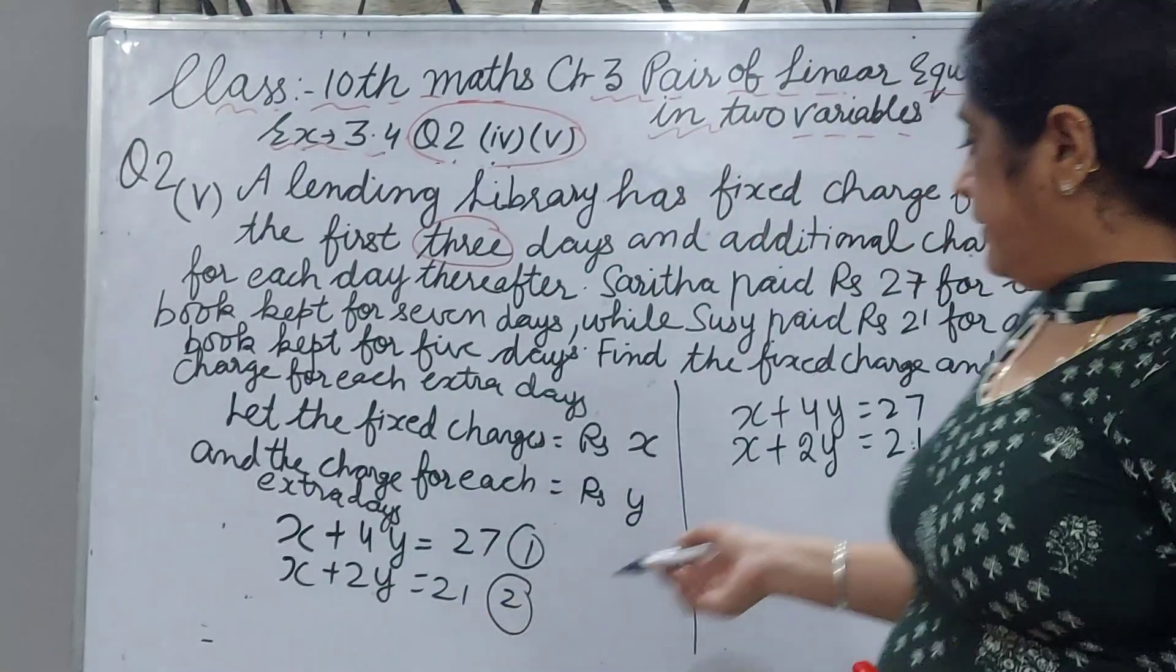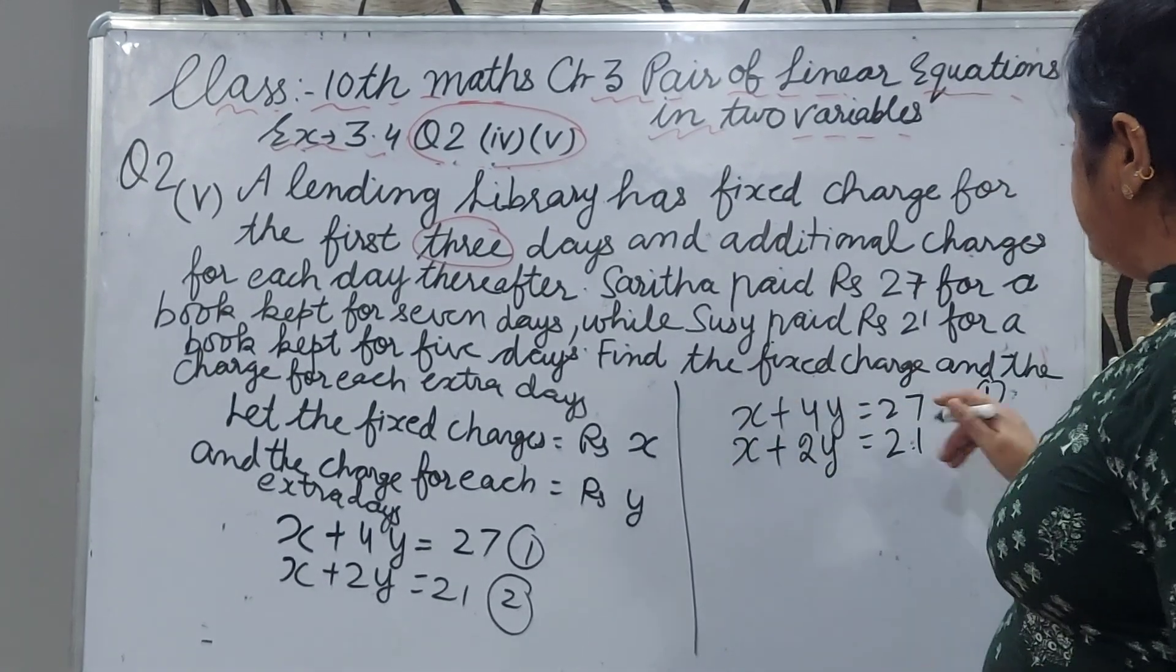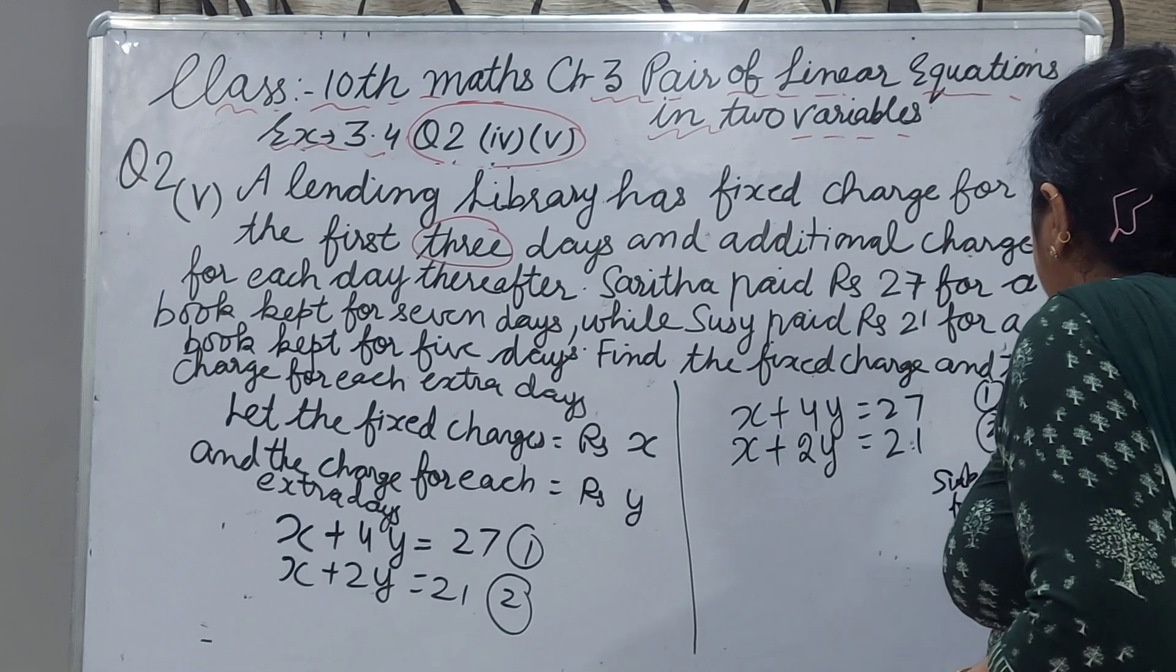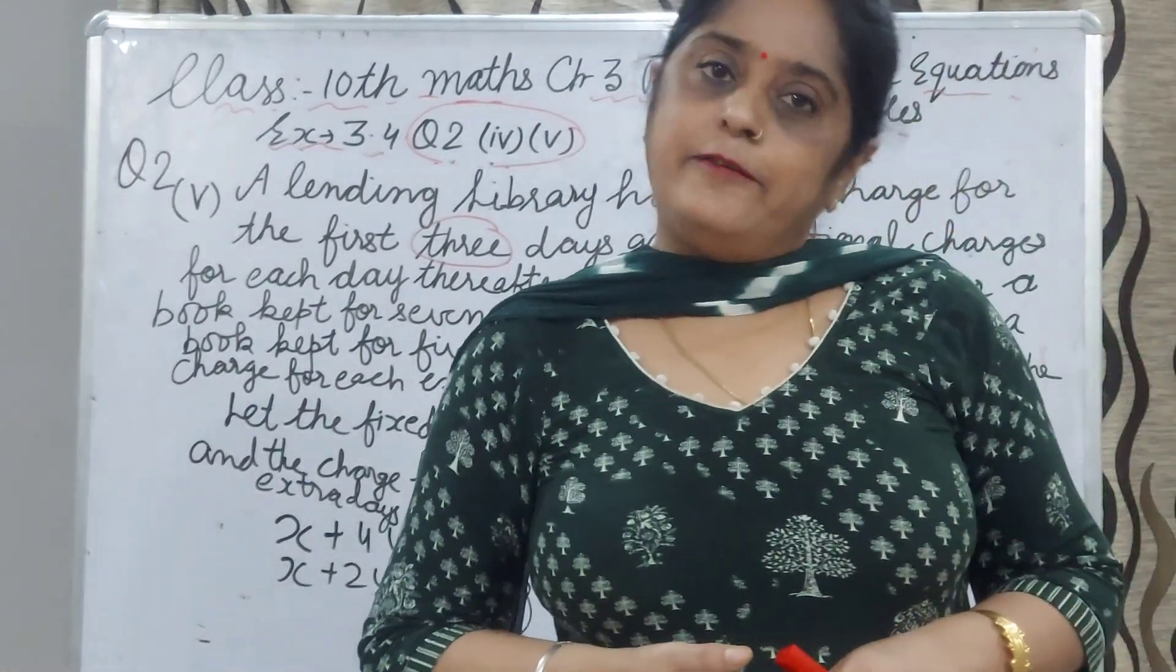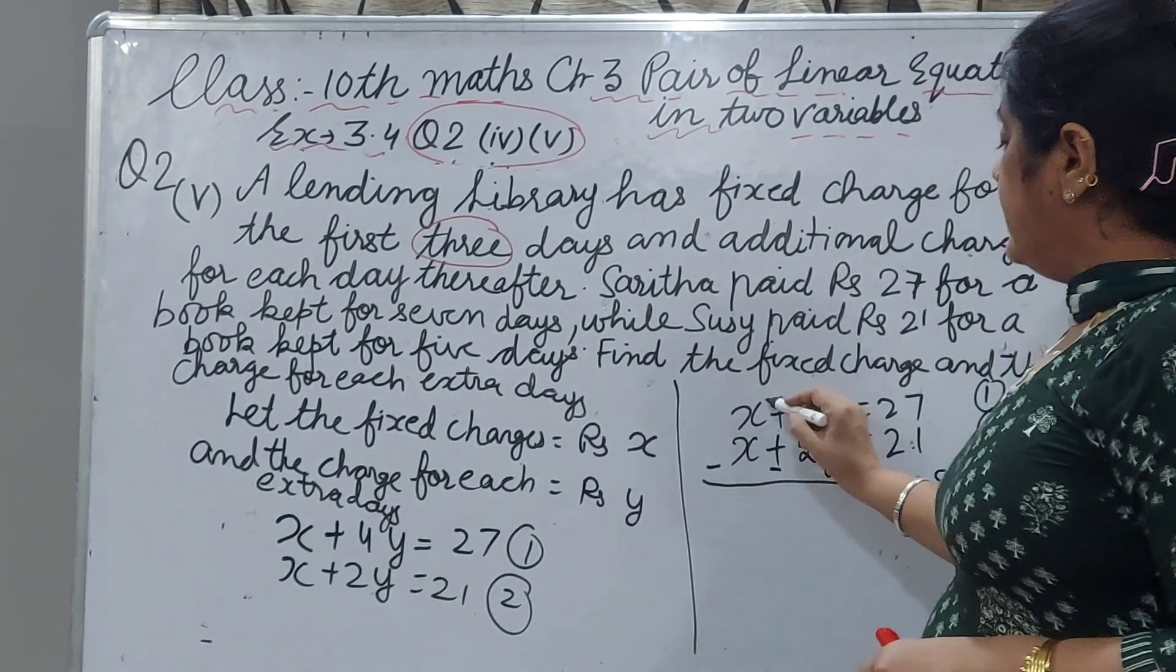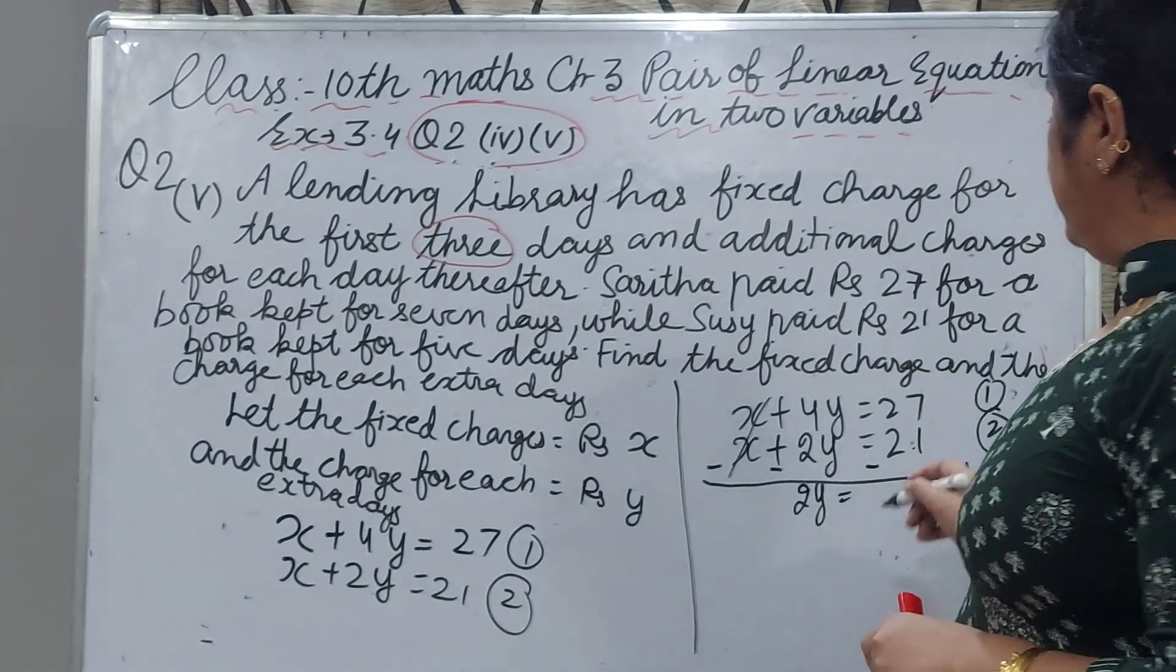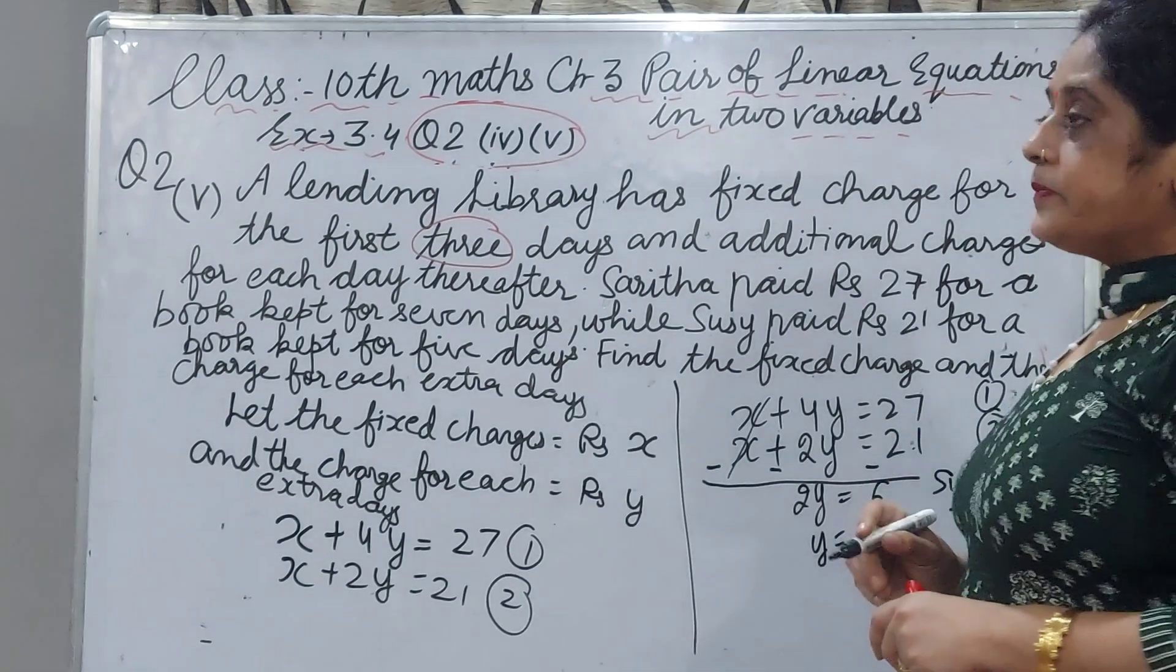We want to eliminate x, so we should subtract equation 2 from equation 1. Because we are subtracting, we have to change the sign. x and x will be cancelled. 4y minus 2y is 2y and 27 minus 21 is 6. y equal to 3.